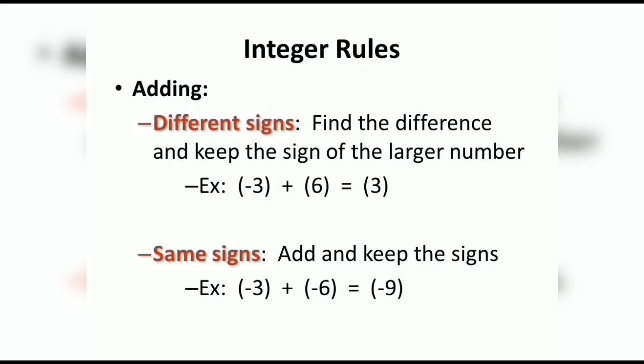When the signs are different, we will find the difference and keep the sign of the larger number. For example, suppose we are having two integers minus three and six. We will subtract them, and on subtracting six and three we will get three as our answer, because we have to keep the sign of the larger number, and out of three and six, six is the larger number.